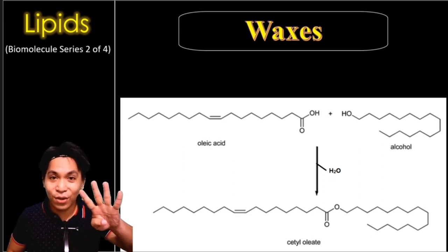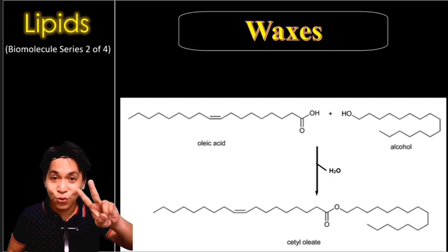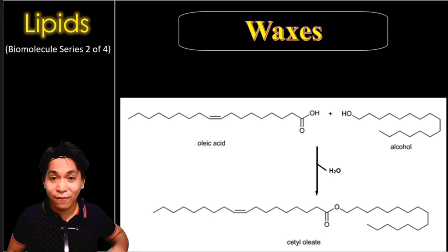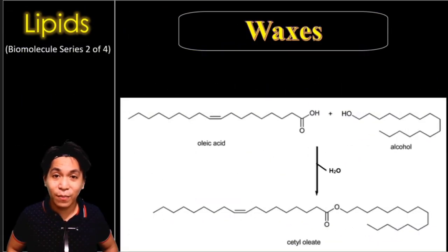To differentiate the four lipids: if it has three fatty acids, it's a triglyceride; two fatty acids means a phospholipid; one fatty acid means a wax; and if a lipid has no fatty acid, then it's a steroid. That is the second part of this four-part miniseries. If you want to look for the other molecules, you can check the description below. See you next time.